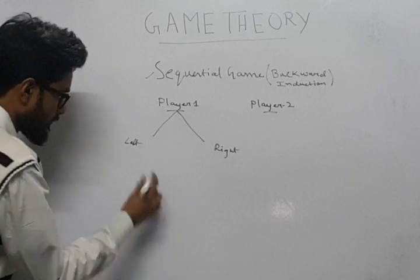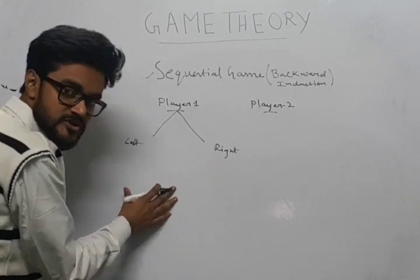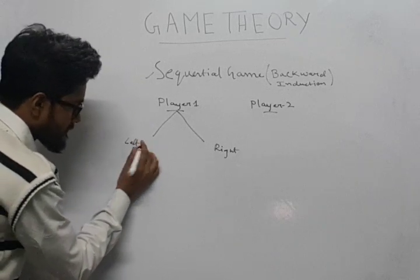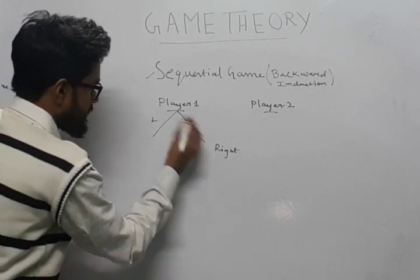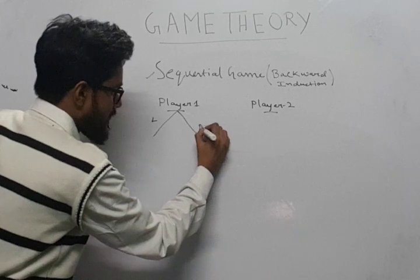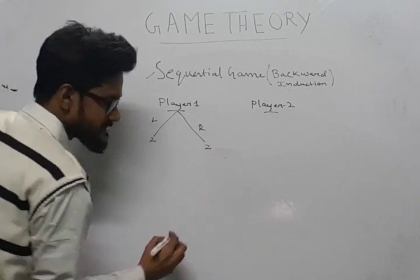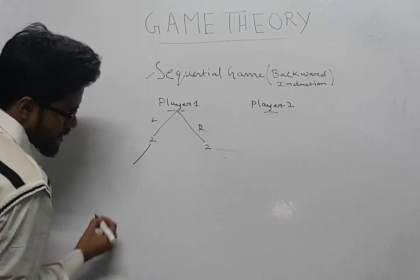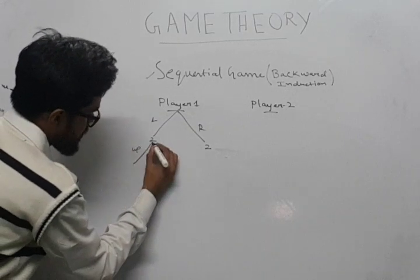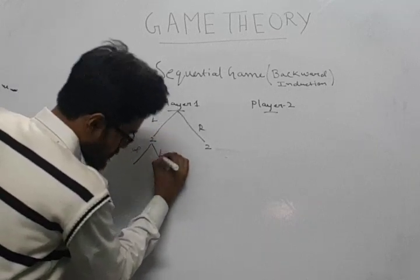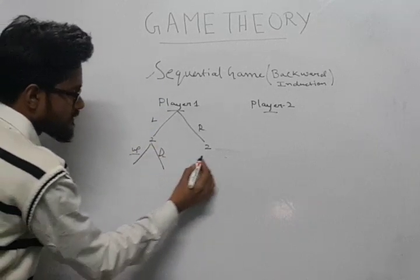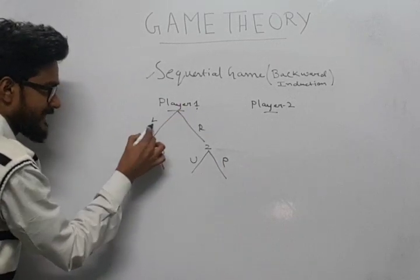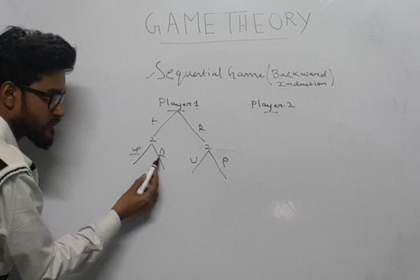After player 1's strategies, player 2 has two more strategies. If player 1 writes L here or R here, player 2 has two strategies: up and down. So if player 1 plays L, player 2 chooses either up or down, and similarly if player 1 plays R.